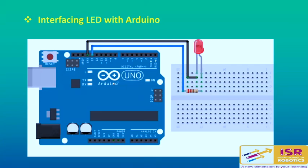In this session, we will learn how to interface an LED with the Arduino. There is a built-in LED on the Arduino board connected to pin number 13, which is a digital pin of the Arduino Uno. We have connected an LED to pin 13 of the Arduino Uno along with a resistor to limit current flow. The negative terminal of the LED is connected to the ground of the Arduino and the positive terminal is connected to pin 13 through the resistor.